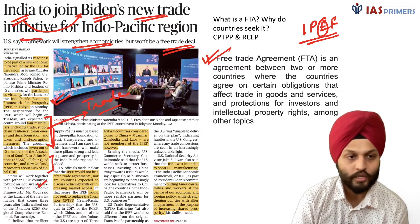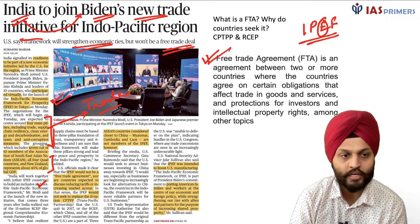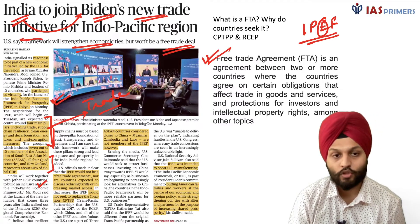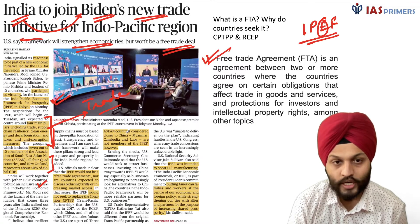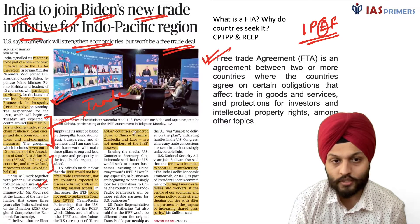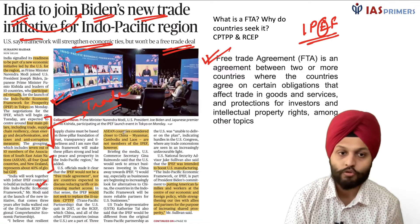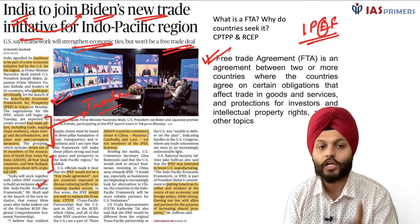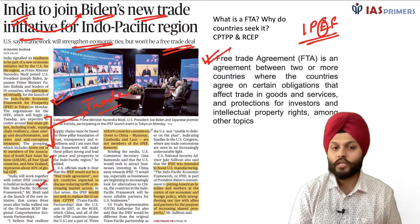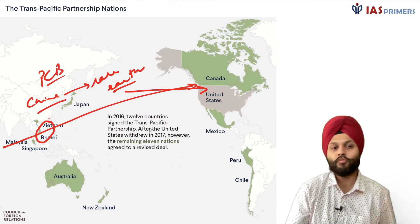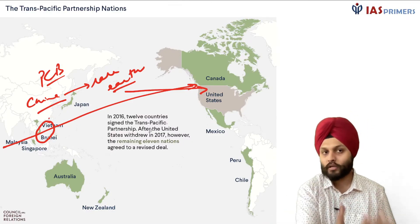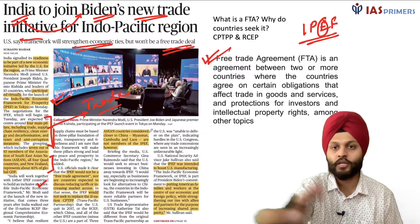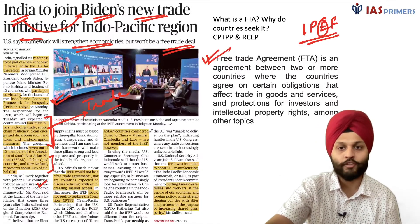This article also tells us about the size and heft of this grouping. It includes 7 out of 10 ASEAN members. China is not part of it, and neither are Myanmar, Cambodia, and Laos — countries that are close to China — so these countries are not members of the Indo-Pacific Economic Framework.